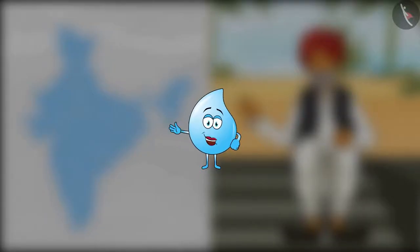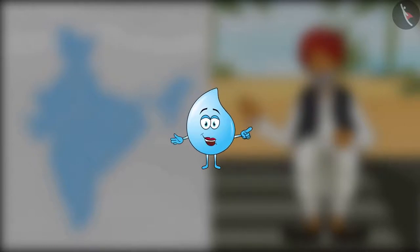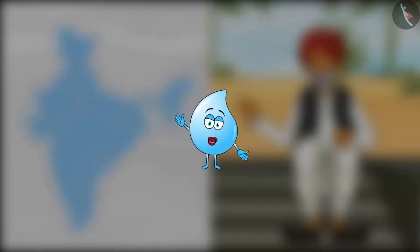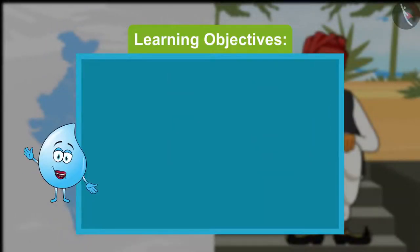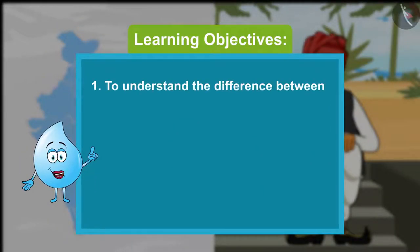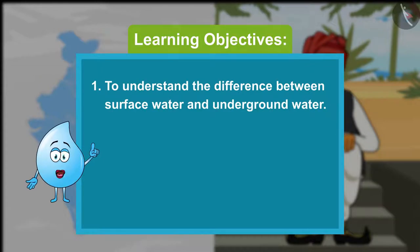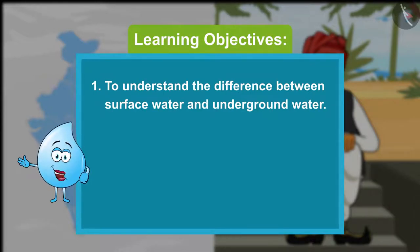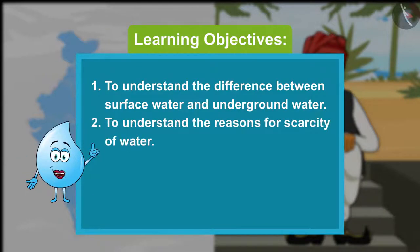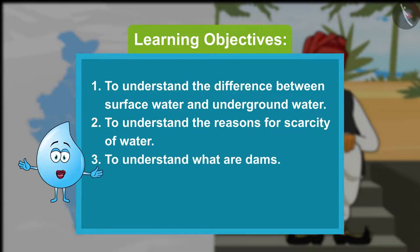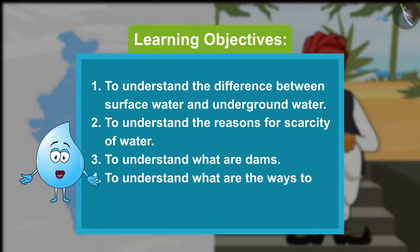It's time for Bhovan and Arjun to come back from school. They must be getting curious to know the answers to their questions from Dadaji. So let us go with Bhovan and Arjun to meet Dadaji. The objectives of this video are: one, to understand the difference between surface water and groundwater; two, to understand the reasons for scarcity of water; three, to understand what dams are; and four, to understand the ways to save water.